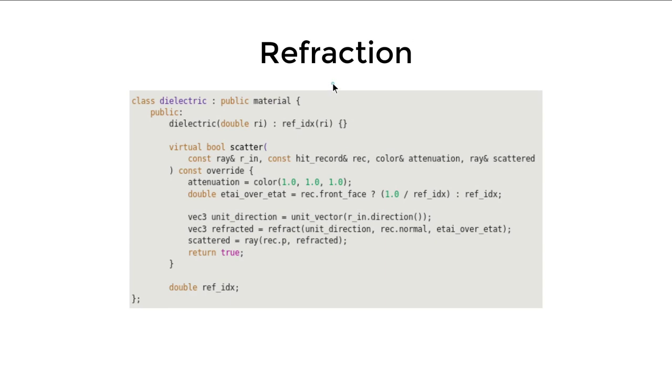And then, in our dielectric material, we will just use that refraction function to calculate the refractive direction. Notice, notice here, when we calculate the reflection index, we need to make sure if it is front face or back face. So if we are inside the surface, inside a sphere with high reflection index, or if we are in the air, basically. So at least in this code, does not support materials with different reflection index intersect with each other. For example, a glass ball in the water, this code do not support that. It only support air.